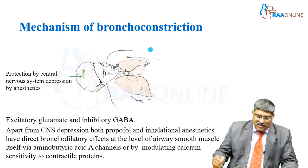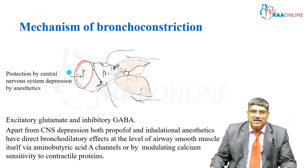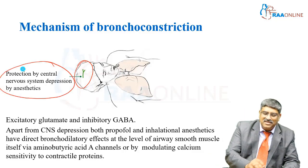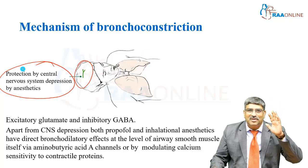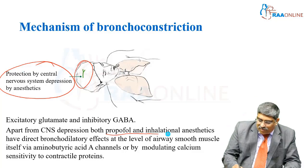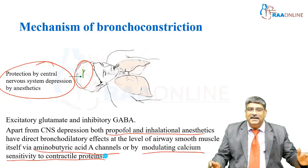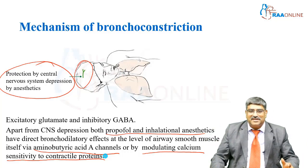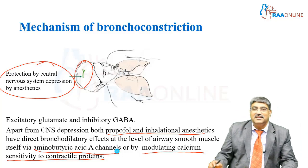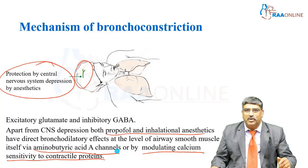Apart from that, there is a central mechanism for causing bronchospasm. By anesthetizing the patient deeply, we can prevent this centrally induced bronchoconstriction. Both propofol and inhalation agents, apart from acting centrally, prevent bronchoconstriction by acting directly on the GABA-A channels as well as by modulating the calcium response to contractile proteins.